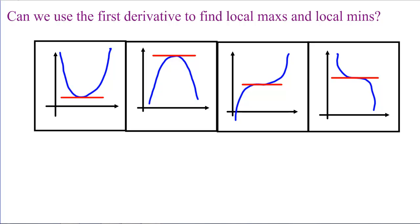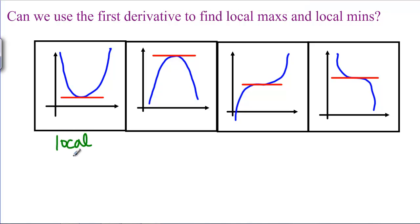If we look at these graphs here of some different examples, we can see that in the graph where we have a local minimum, we have F decreasing and then F increasing after the local minimum.